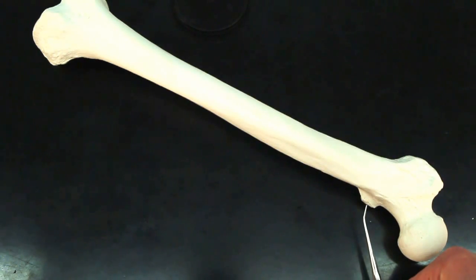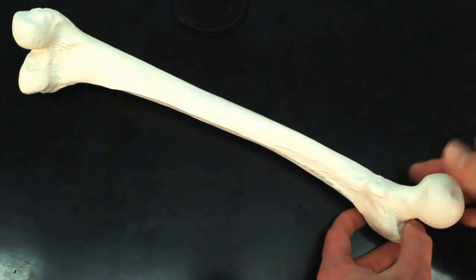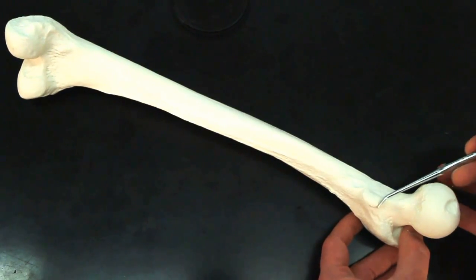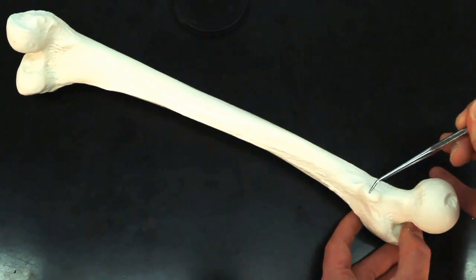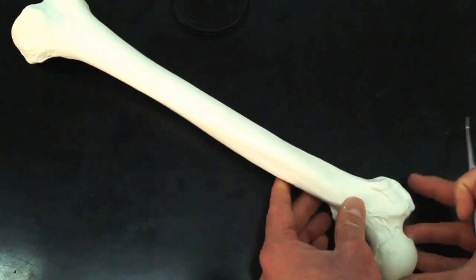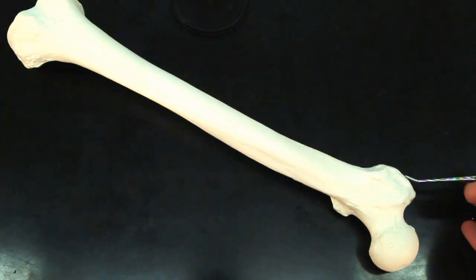While this smaller protrusion down here, if we turn it around, this smaller one is the lesser trochanter. So lesser trochanter, greater trochanter.